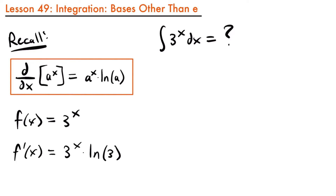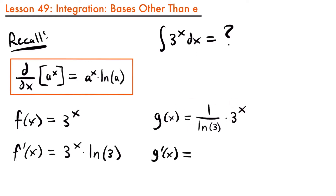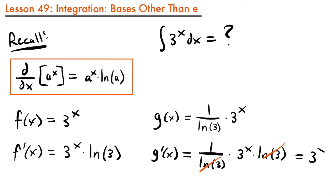So if we're trying to find a function whose derivative is 3 to the power of x, consider g of x is equal to 1 divided by the natural log of 3 times 3 to the power of x. If we take the derivative of this, we'll have g prime of x equal to that constant multiple 1 divided by the natural log of 3, times the derivative of 3 to the power of x, which is 3 to the power of x times the natural log of 3. Notice that the natural log of 3 will cancel out with the natural log of 3, and our derivative will be equal to just 3 to the power of x.